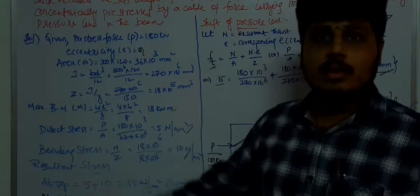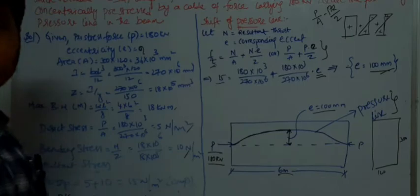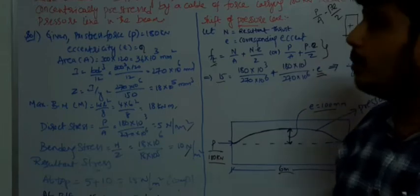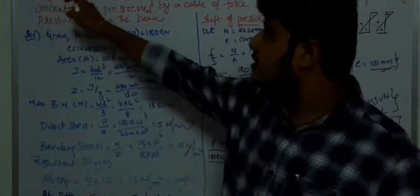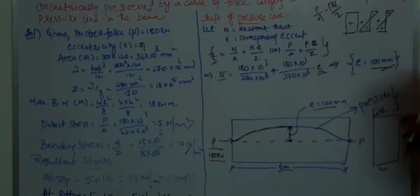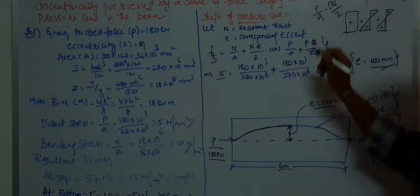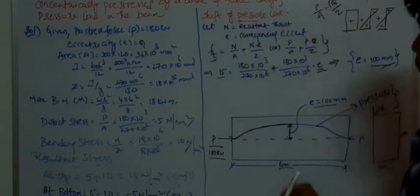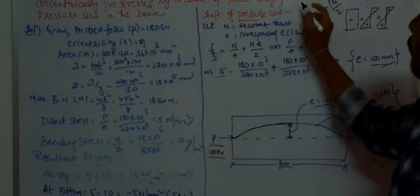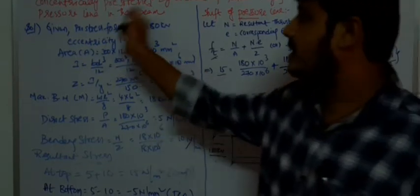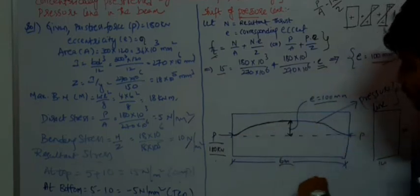Good morning students. Now we will discuss the pressure line problem, also called the thrust line problem. We have already discussed the concept of pressure line; now we will solve a problem. A prestressed concrete beam with a rectangular section of 120 mm wide and 300 mm depth, with a 6-meter span and UDL of 4 kN/m (including self-weight). The beam is concentrically prestressed with a force of 180 kN. Locate the position of the pressure line.